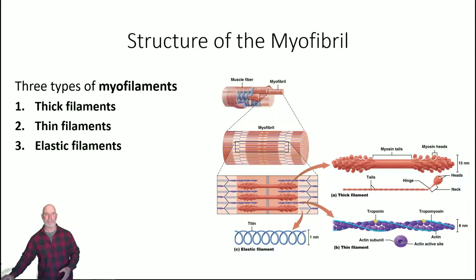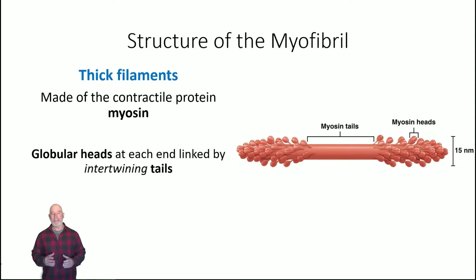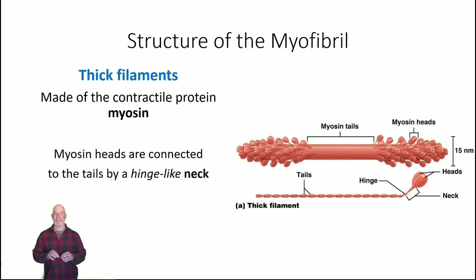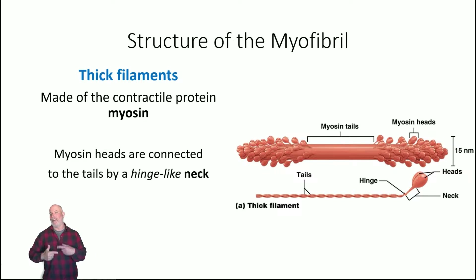When it comes to contractile proteins, there are three types of myofilaments: the thick filament, the thin filament, and the elastic filament. The thick filament is made up of myosin — a contractile protein — with globular heads at the ends linked by intertwining tails. Each individual myosin molecule has a head, a hinged neck that can move, and a long tail. Those long tails intertwine together to form the thick central region without the heads.